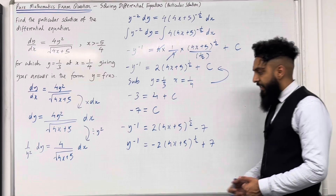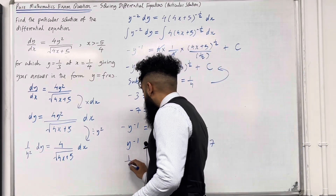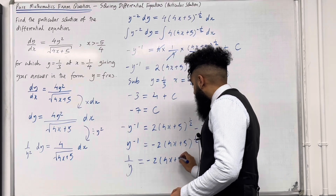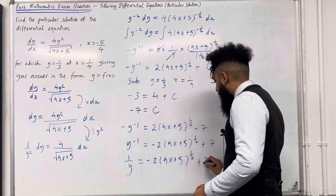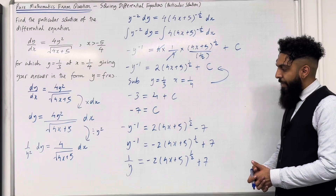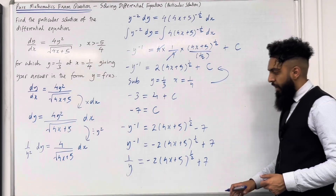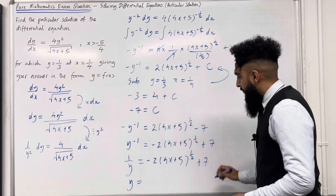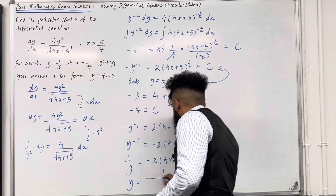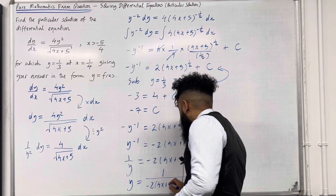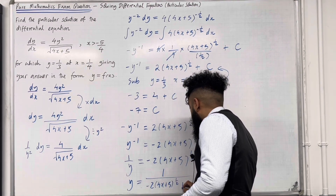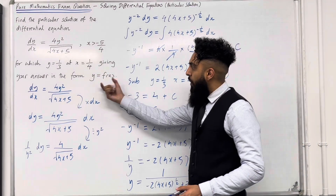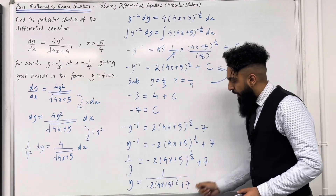y to the power minus 1 is the same as 1 over y. So I've got 1 over y equal minus 2 lots of (4x plus 5) to the power 1 half plus 7. Taking the reciprocal of both sides gives y equal 1 over minus 2 lots of (4x plus 5) to the power 1 half plus 7. That is my desired form, y equal f of x, where f of x is this particular fraction.